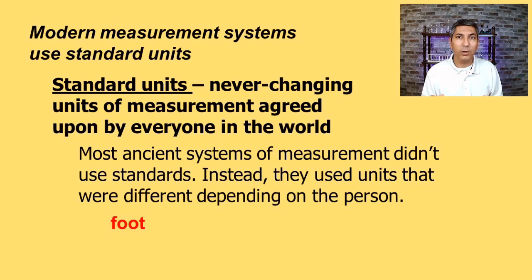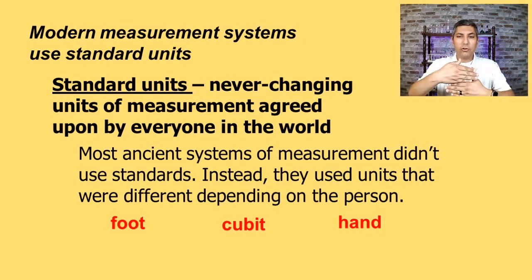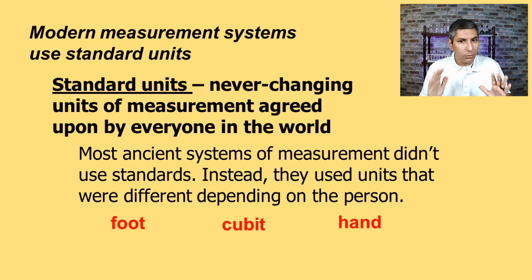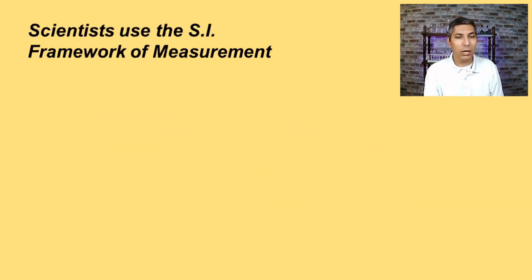For example, you might have heard of the foot. People would actually measure things out based upon the length of their foot, or maybe they'd use the king's foot. But if the king died, then you'd have a new foot when there was a new king. Perhaps you've heard of the cubit. A cubit is approximately the length between a person's elbow and the tip of their middle finger. The problem is if you use a cubit, it might be different based upon the person who's doing the measuring.